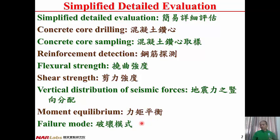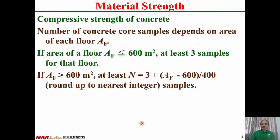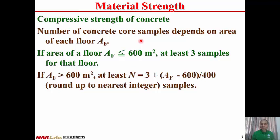There are different failure modes of the column line. Speaking of compressive strength of concrete, we have to take concrete cores from the column or from the beam. The number of concrete core samples depends on the area of each floor.